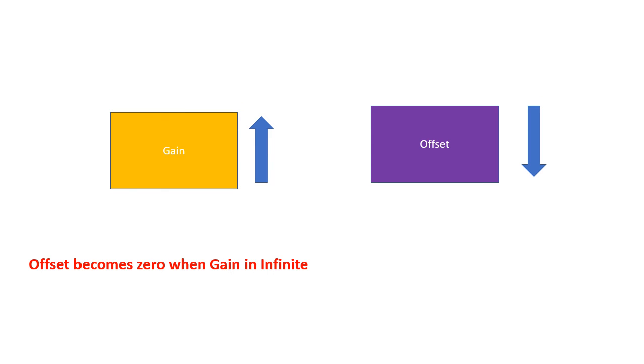To make the offset zero, we have to make the gain infinite, which is practically not possible. Practically gain cannot be increased after a certain value because the process gain becomes so high that the process becomes oscillatory, which is not desirable.